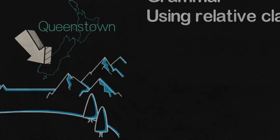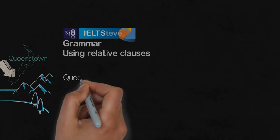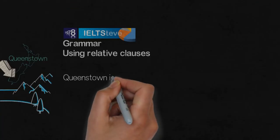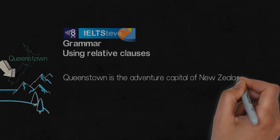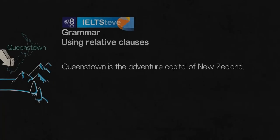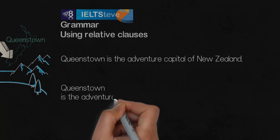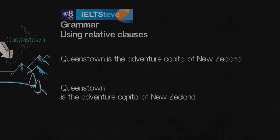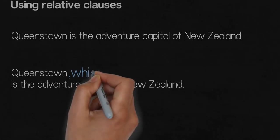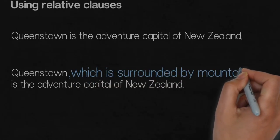The way we would do that is by inserting some extra information in the middle of the sentence. So simply, we would say it like this for a start: Queenstown is the adventure capital of New Zealand. But when we want to add the bit about the mountains, we insert it directly after Queenstown: Queenstown, which is surrounded by mountains, is the adventure capital of New Zealand.